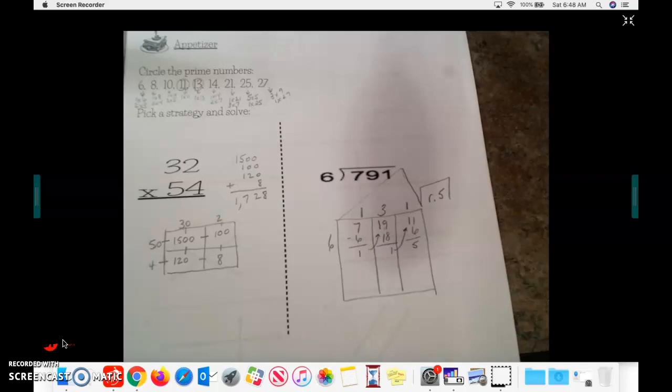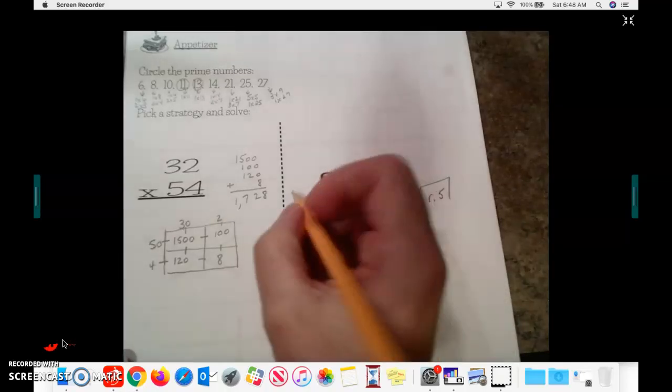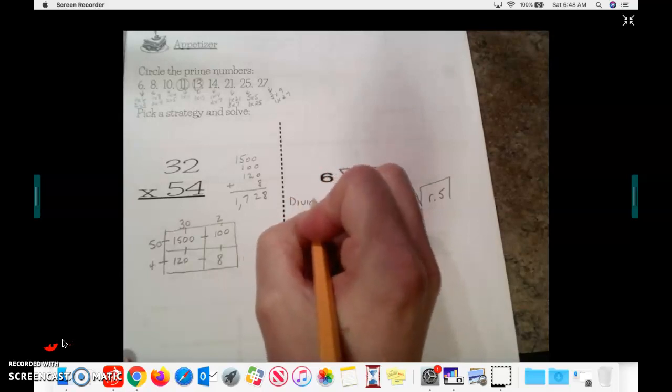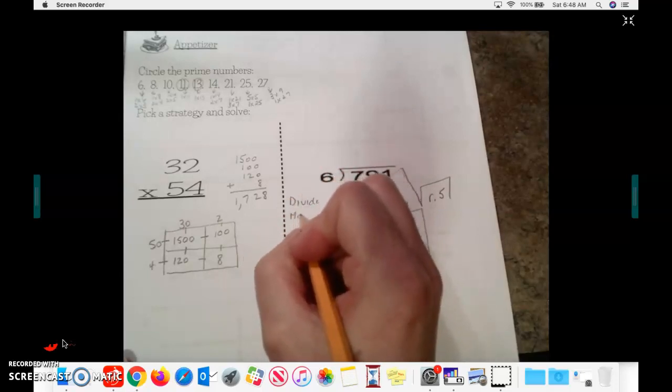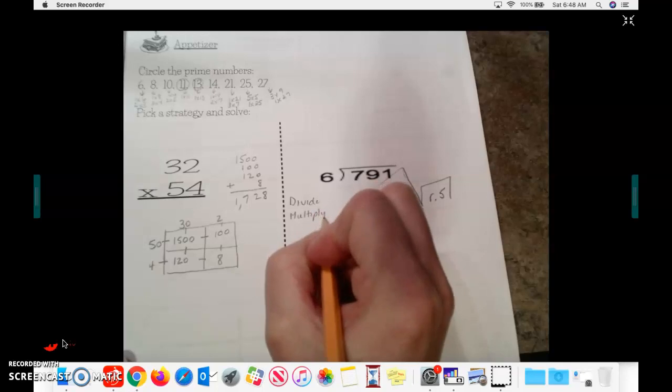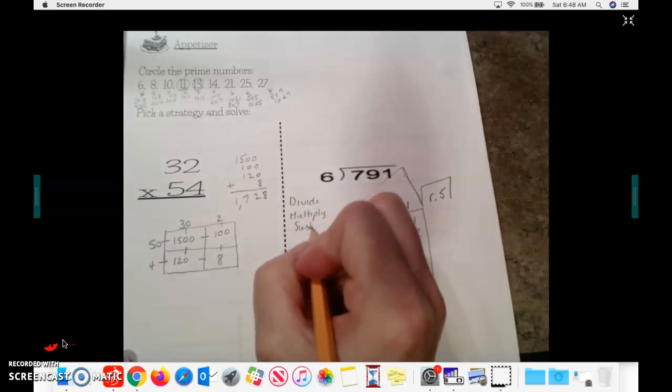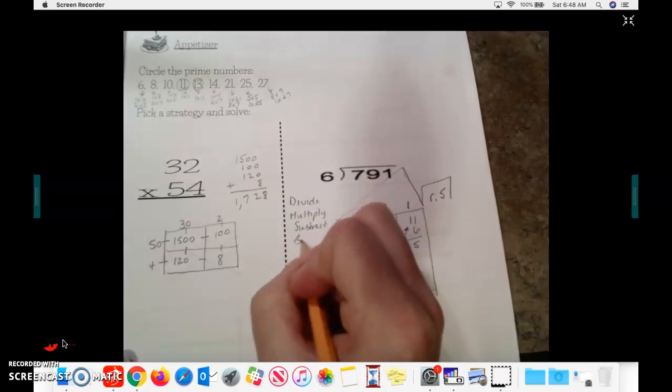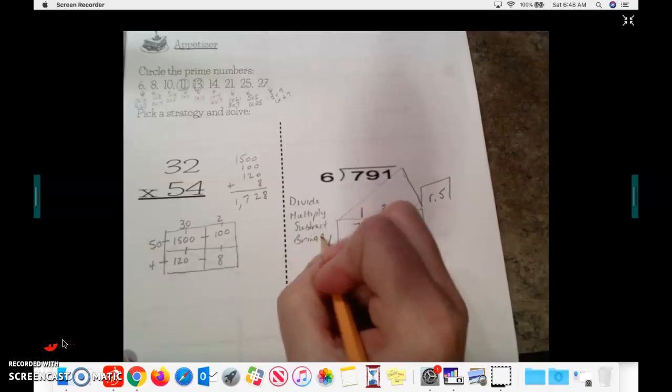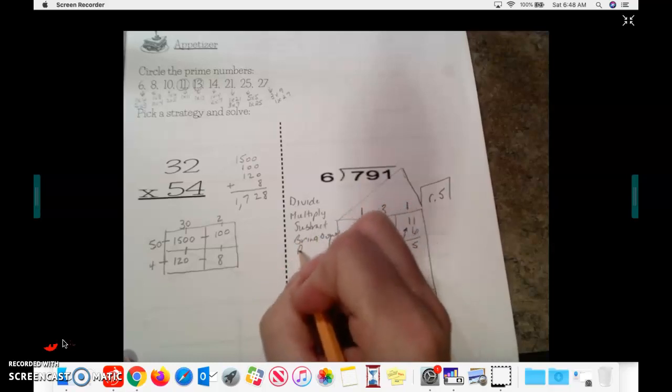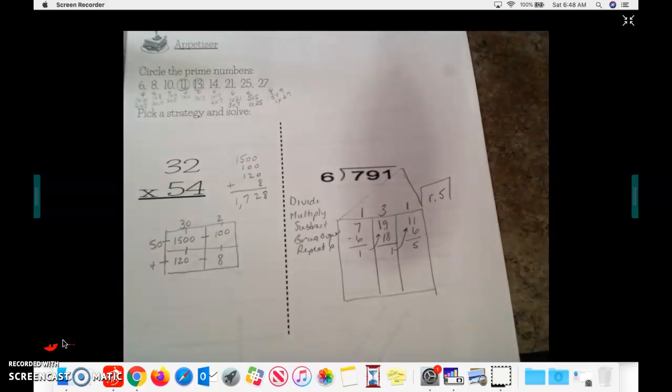Be sure that when you're doing your long division, whether you're choosing the traditional or using this box method, that you follow the steps of divide, multiply, subtract, bring down, and then we keep repeating until we have used all of our digits.